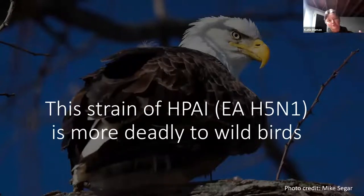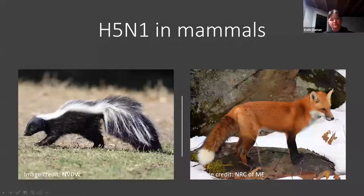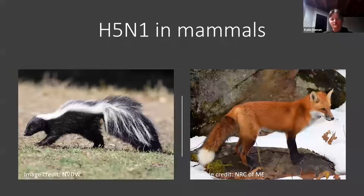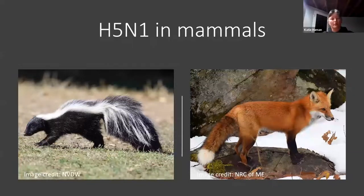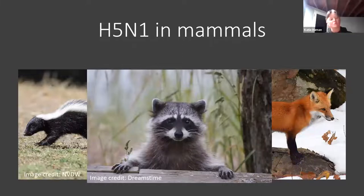We do see H5N1 in mammals — raccoons, foxes, skunks, and harbor seals. This could be alarming if it starts to mutate and evolve in mammals, as it could become more pathogenic or more infectious to humans. However, so far when these three species have been detected with high path AI, it's been in really close proximity to piles of dead geese or dead birds that we know they were scavenging on — the thought is they had a really high infectious dose from that.